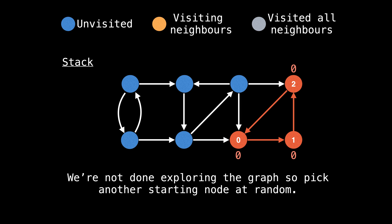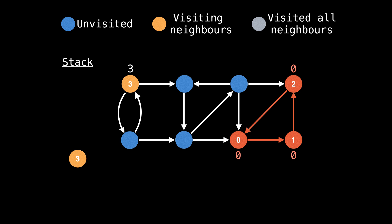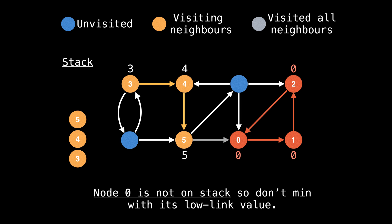However, we're not done exploring the graph, so pick another node at random. Let's start at node three and go right. Our only option is to go down. Now we're at node five — let's take the edge to node zero. Node zero is already visited, so we can't go there. On the callback, we notice that node zero is not on the stack at the moment, so we can't min node five's low-link value against node zero. This is actually very good, because if we did, then we would contaminate the strongly connected component node five is part of with the lower low-link value which node zero has to offer.